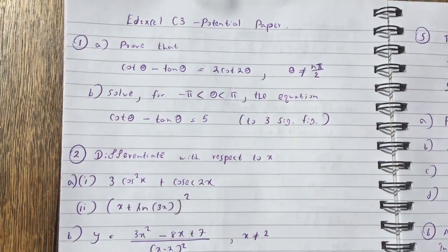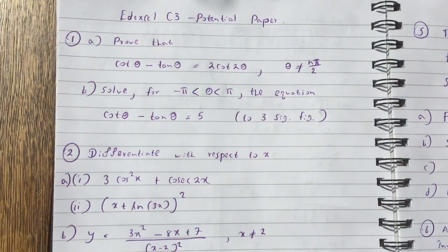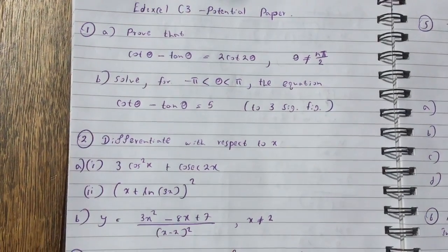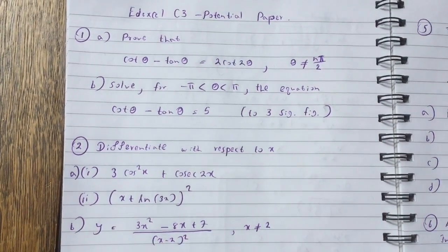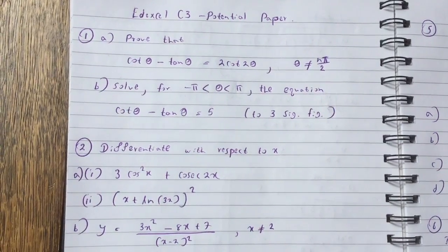Question 1A, prove that cot theta minus tan theta equals 2 cot 2 theta, and theta not equals n pi over 2. Part B, solve for minus pi less than theta less than pi, the equation cot theta minus tan theta equals 5 to 3 significant figures.